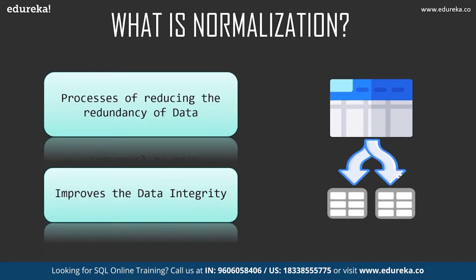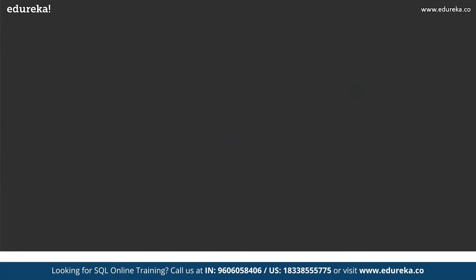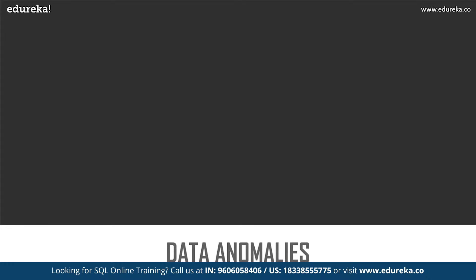Usually data is stored in a database with certain logic — huge datasets without any purpose are completely wasteful. It's like having an abundant resource without any application. The data we have should make some logical sense. Normalization came into existence because of problems that occurred with data. These problems are known as data anomalies. If a table is not properly normalized and has data redundancy, it will not only eat up extra memory space but will also make it difficult to handle and update the database.